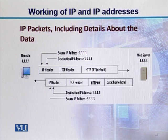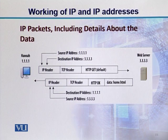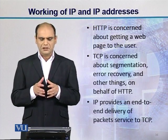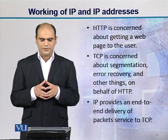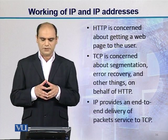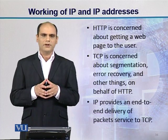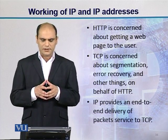As you can see in the diagram, the web server's network interface appends destination IP 1.1.1.1 — that is HANA's IP address — and the source IP is its own. The packet is sent over the network, and then HANA receives it. HANA checks whether the destination IP matches its own — if it matches, this packet is meant for HANA. HTTP is concerned about getting a web page to the user. TCP is concerned about segmentation, error recovery, and other things on behalf of HTTP. IP is responsible for end-to-end delivery of the packets, providing service to TCP.